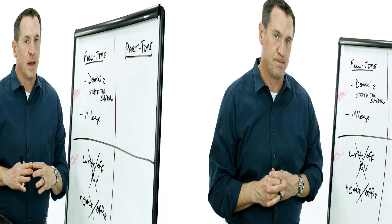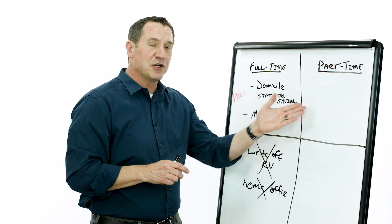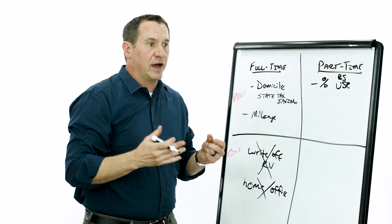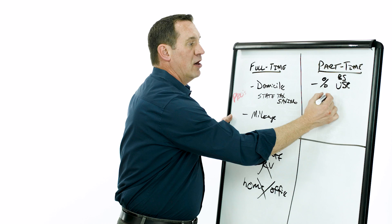Now again, hitting highlights here. Part-timers - here's where the RV gets to be a major pro because now the RV is a business vehicle and you're going to say some percentage of it is going to be for business use. And that means if I use it 80% for business and 20% for personal, I can write off 80% of the fuel, repairs, maintenance.